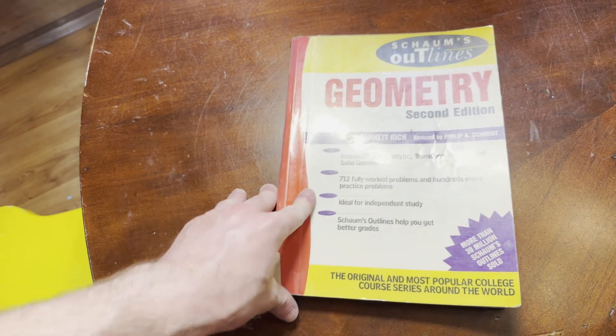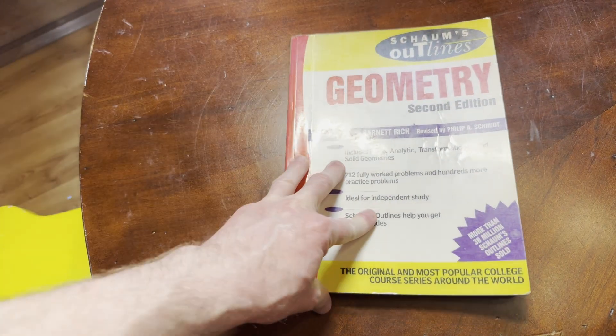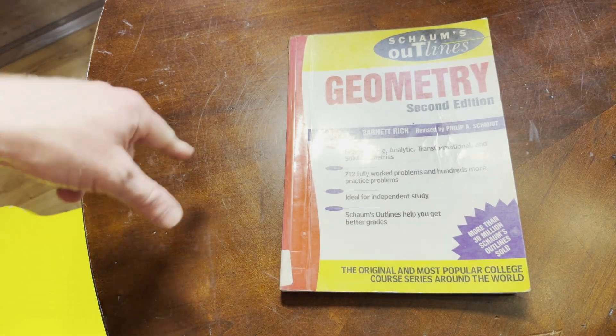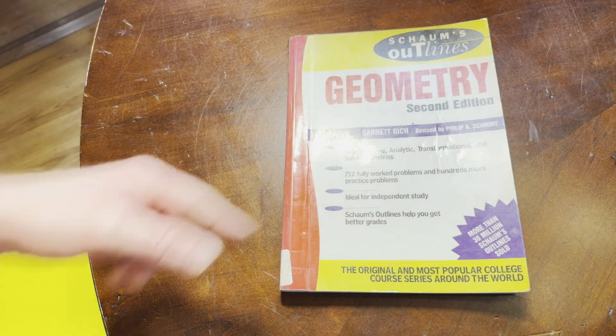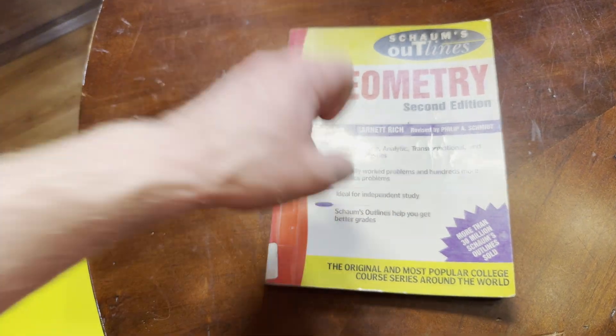But yeah, pretty interesting book. I'll try to leave a link in the description in case you want to check out a copy or whatever. But it's Geometry Schaum's Outlines. Also check out my courses. They're on Udemy, but if you get them, use my links through mathsorcerer.com. Subscribe, like, all that stuff. Keep doing mathematics.